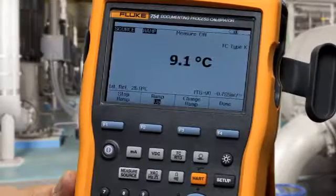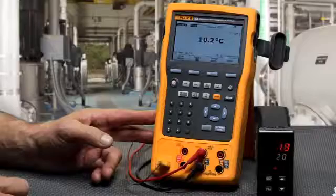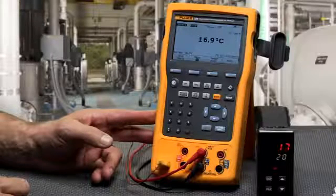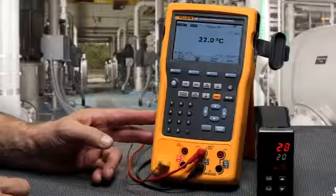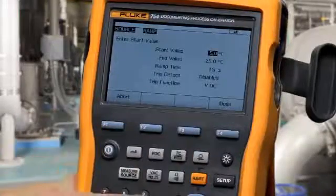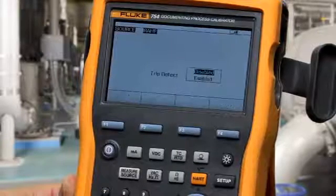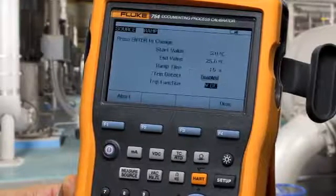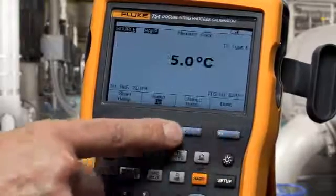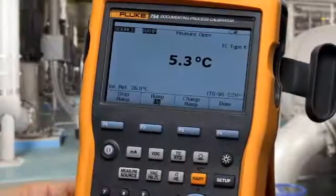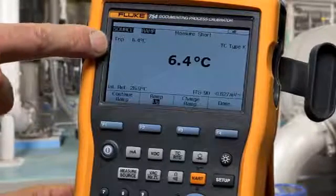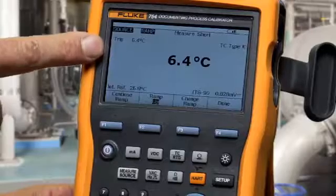To do a ramp with trip detect, the calibrator will ramp the temperature and freeze on the temperature at which it measures a contact state change on the resistance measurement terminals of the calibrator. Select change ramp, enable trip detect, select continuity, and press start ramp, and the calibrator will freeze the temperature that it measures the contact's change state. In this case, 6.4 degrees C.